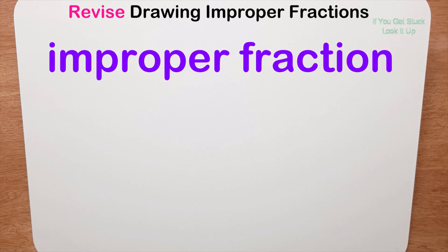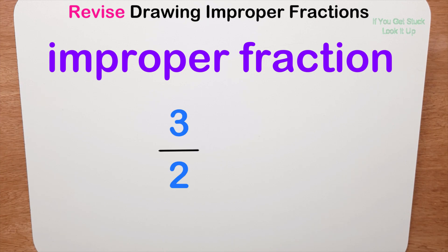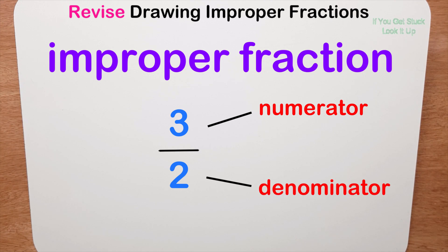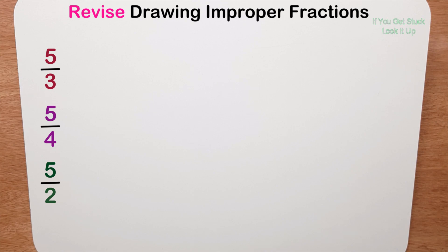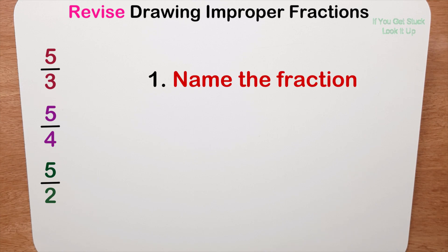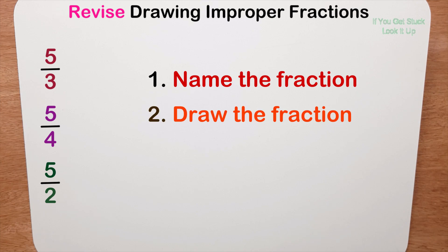In this video we revise improper fractions. An improper fraction is one where the numerator, or top number, is bigger than the denominator, or bottom number. For this exercise, I want you to name these fractions and then draw them.